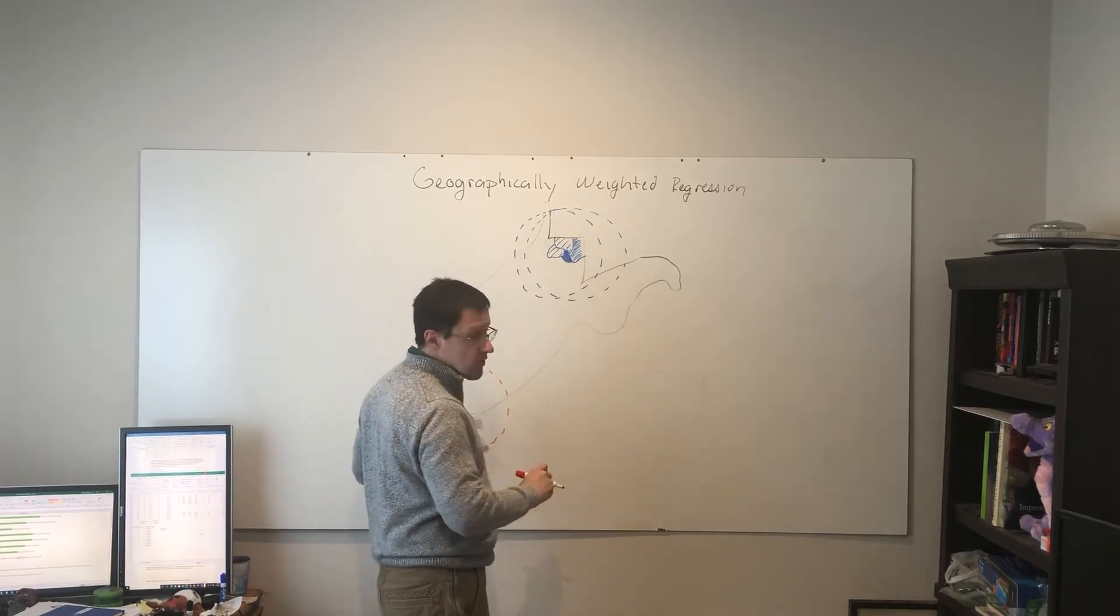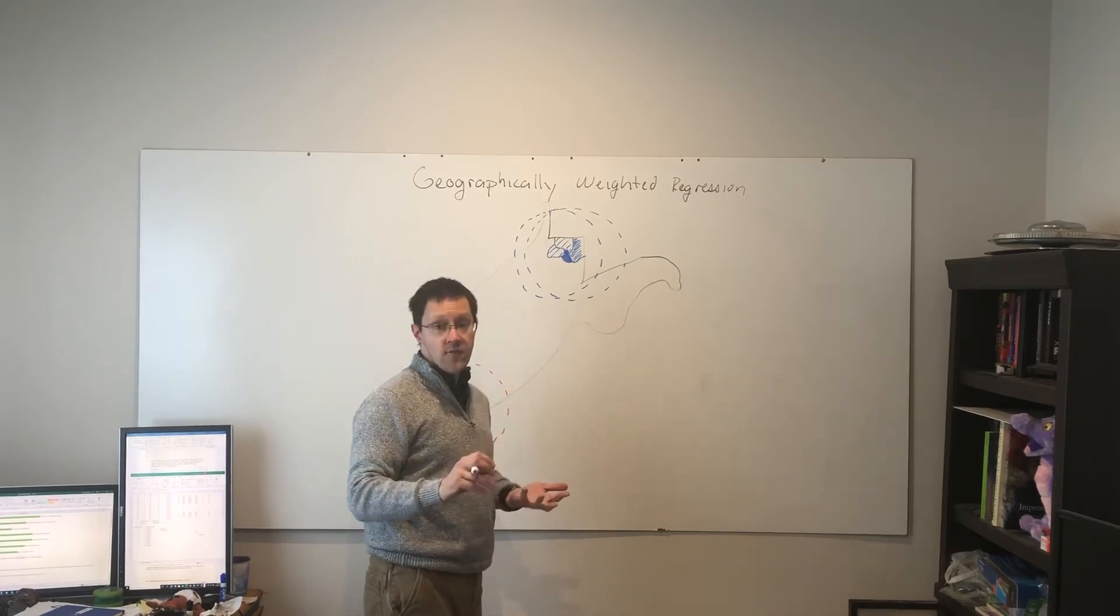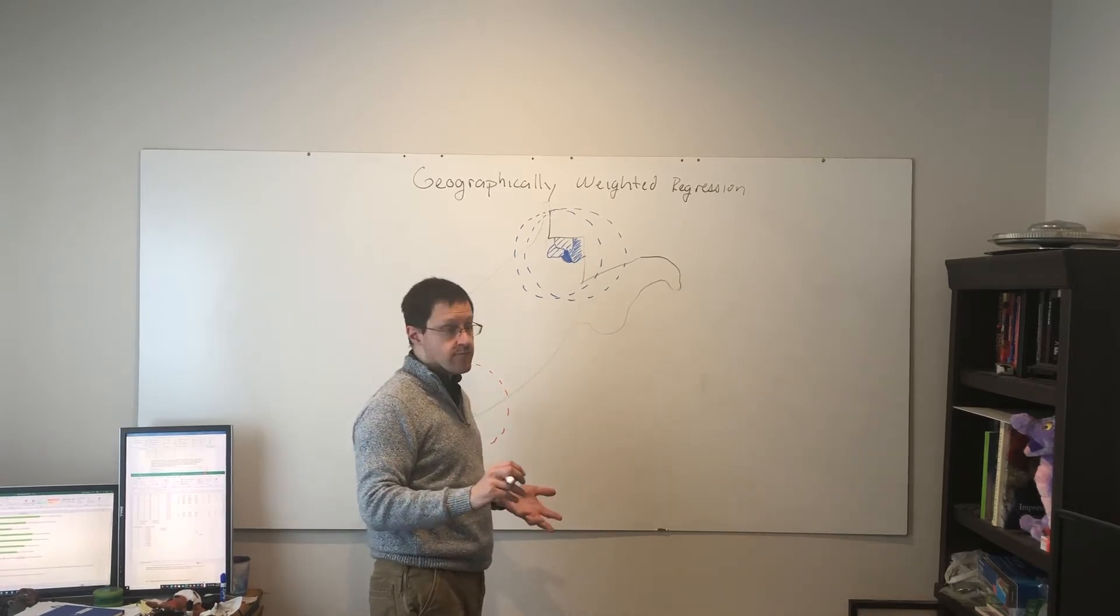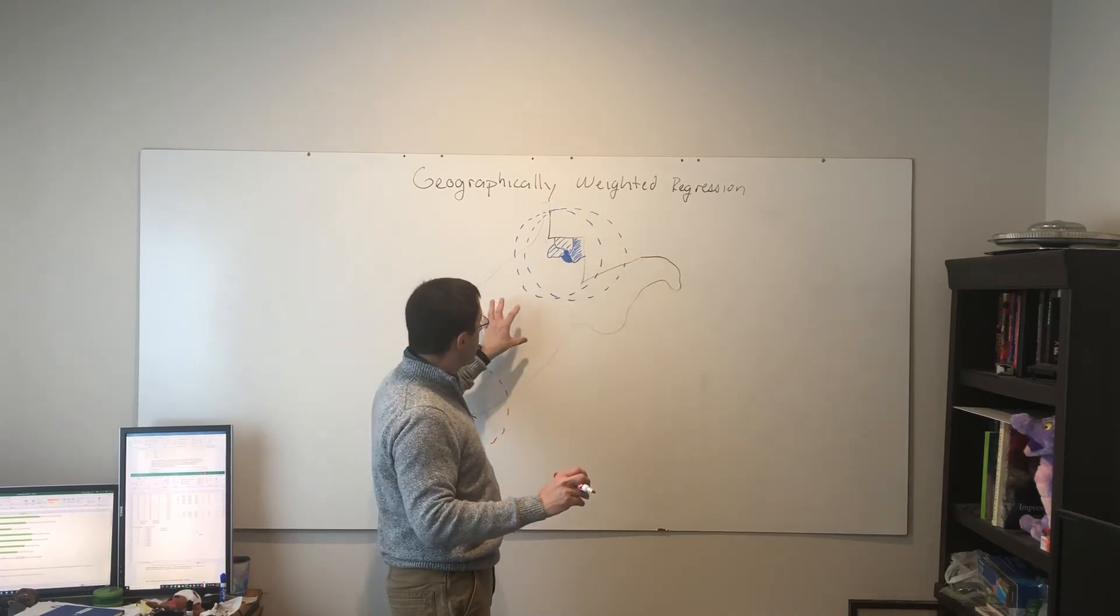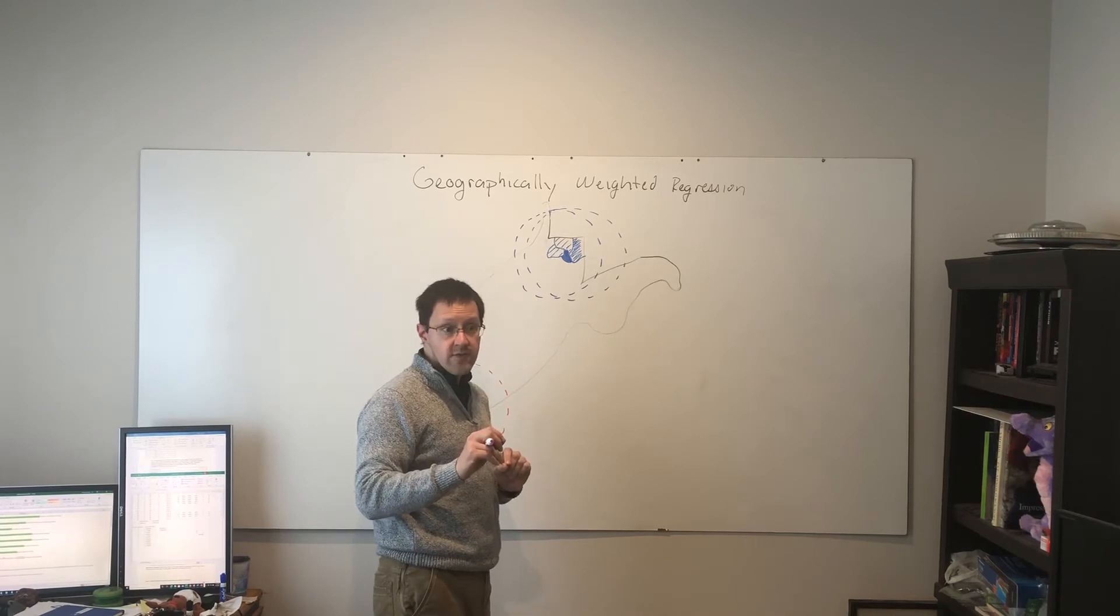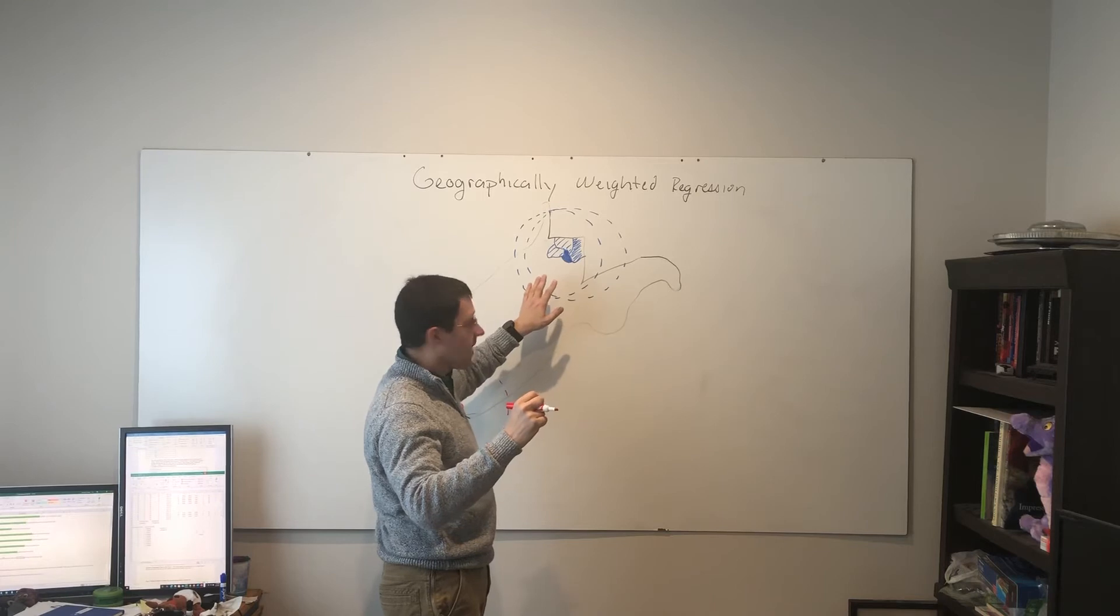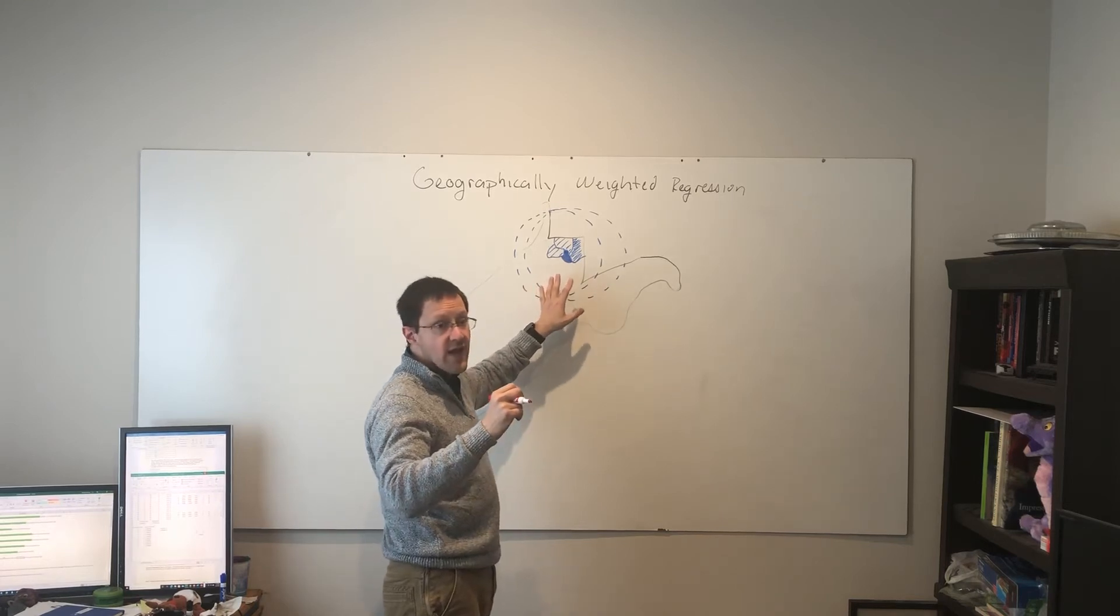And so, say, Mingo County and its neighbors, that becomes a negative relationship. We have to make sure, when we interpret this, for our coefficients, as well as for r-squared, that we bear in mind that neighborhood.